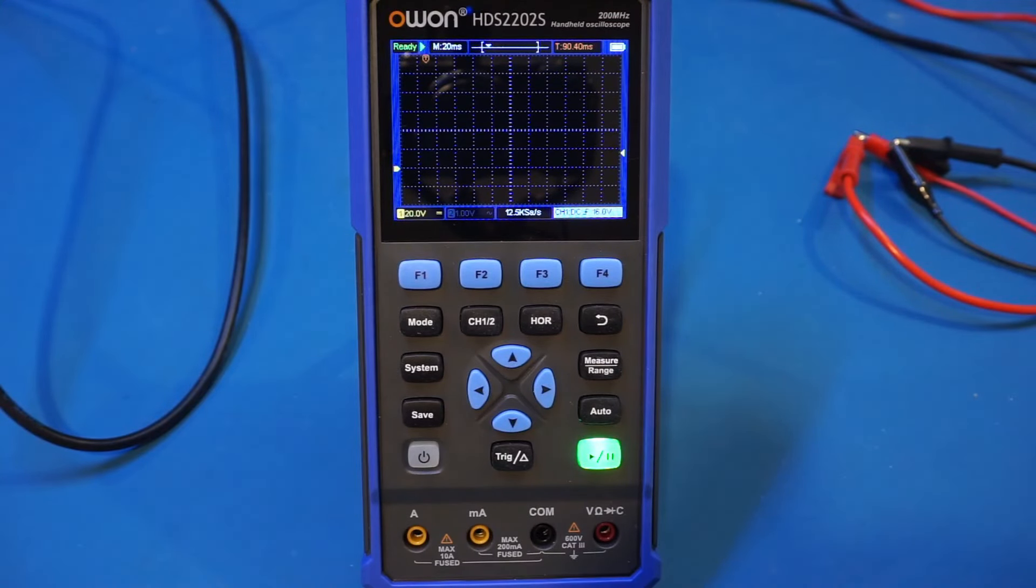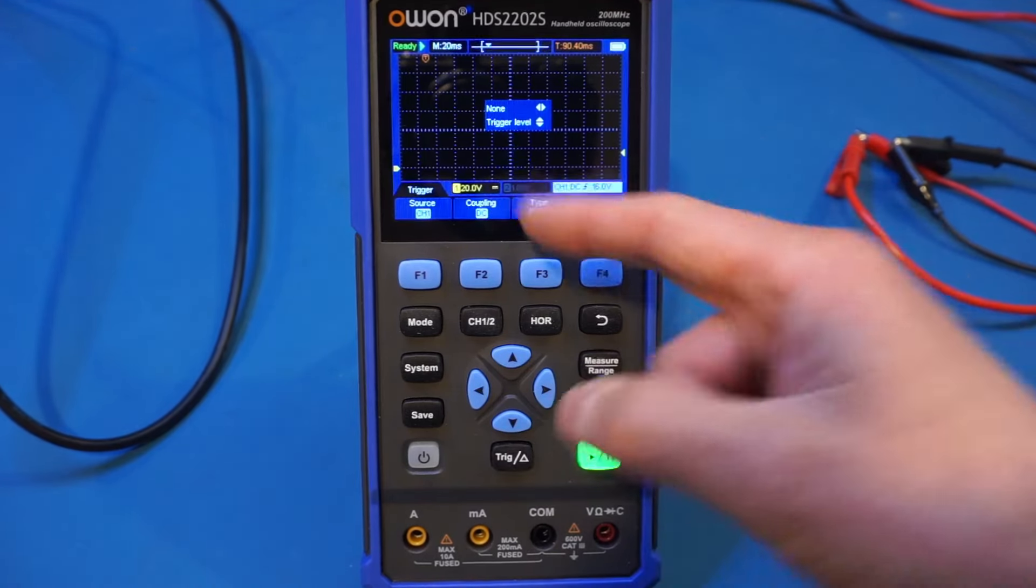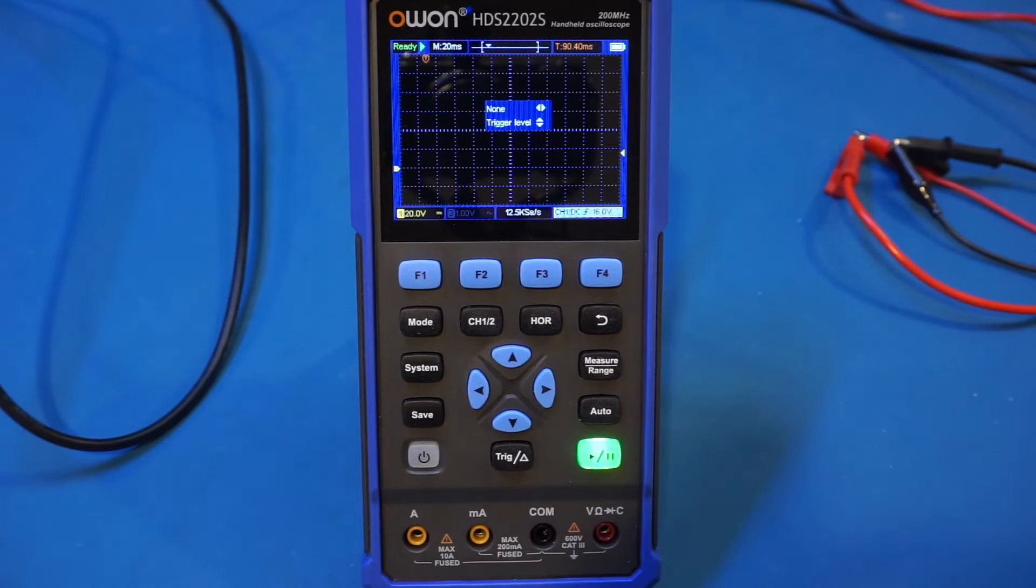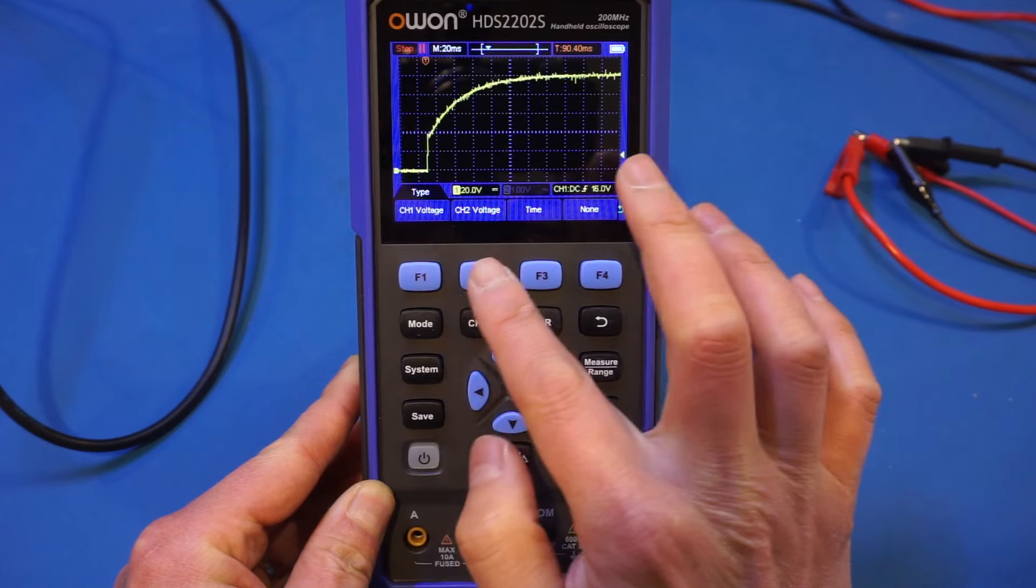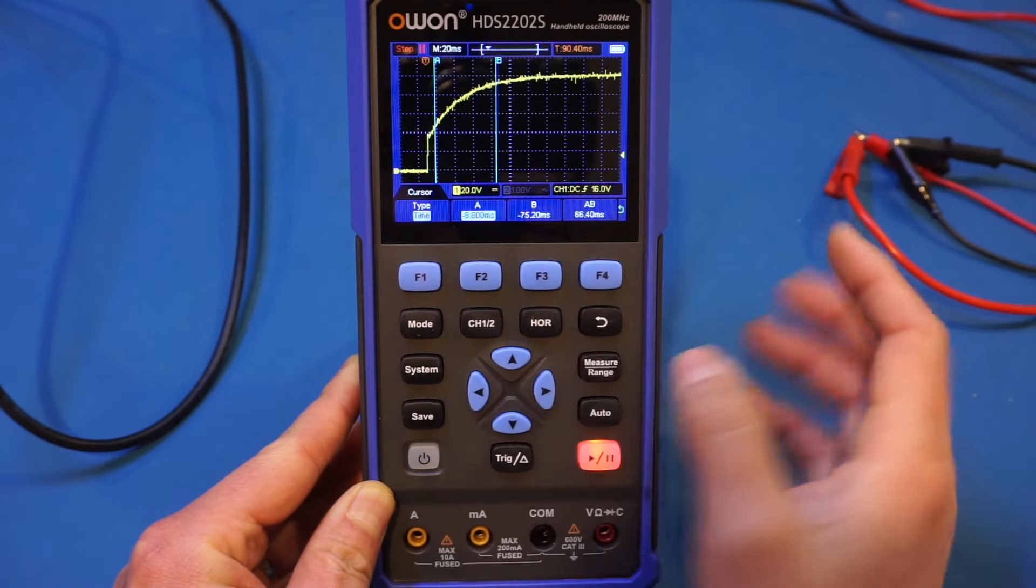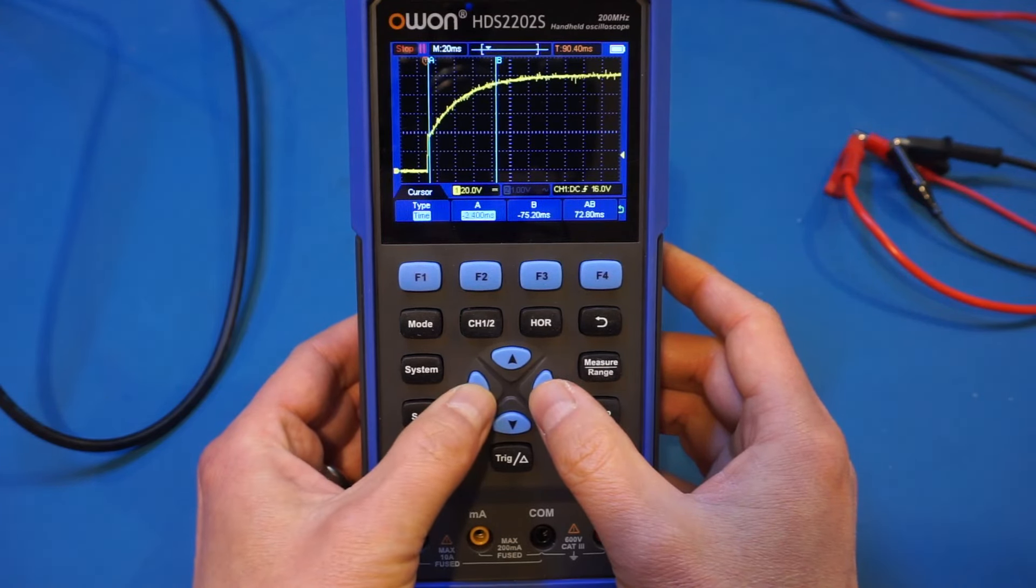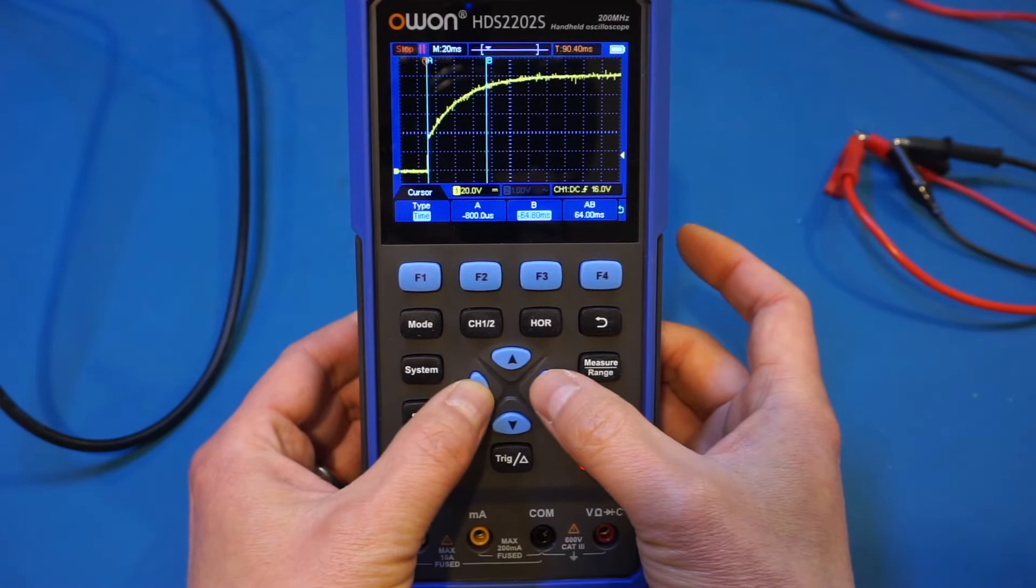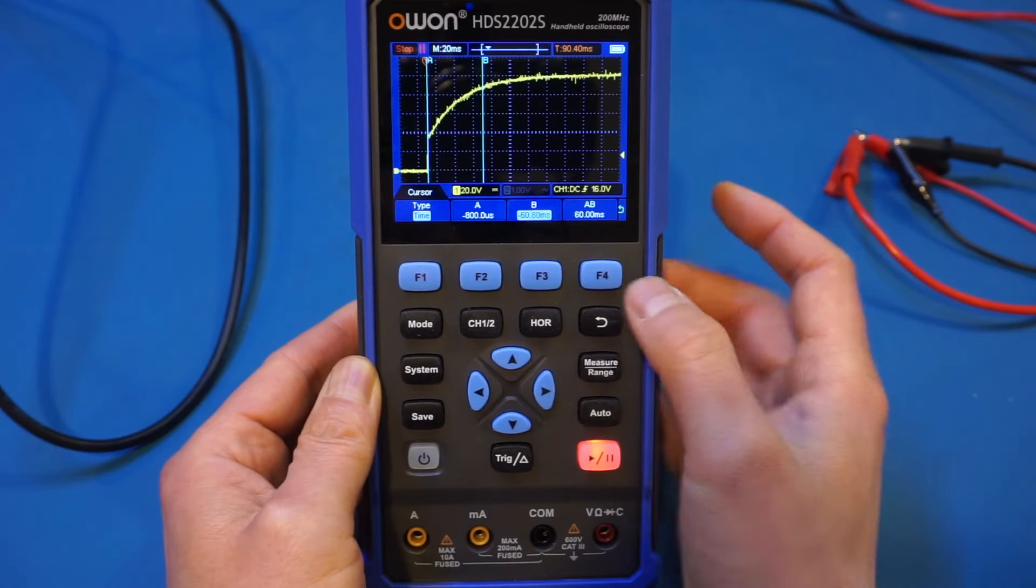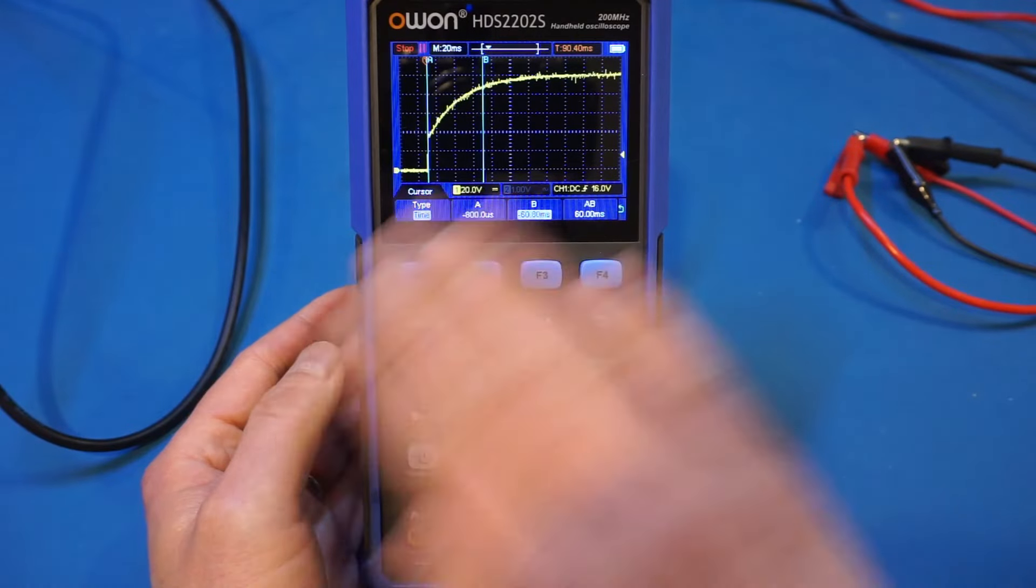Next, let me demonstrate the single-shot capability of this oscilloscope. For that, I have hooked it up to a power supply. And you can see that I have set the trigger to single-shot. Let me power it on. As you can see, we have captured the power-on curve of the power supply. So let's do some measurement on that. Let me go to measure, cursor. Type will be channel 1 time. Let's move it. So you can see that roughly 60 milliseconds for the power supply to reach the stable voltage.